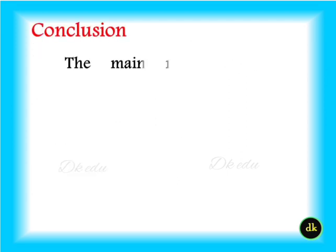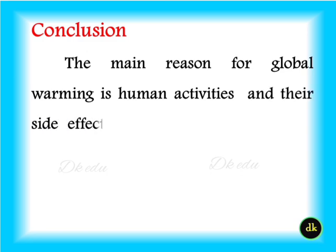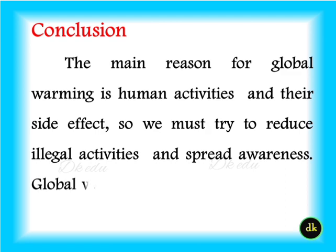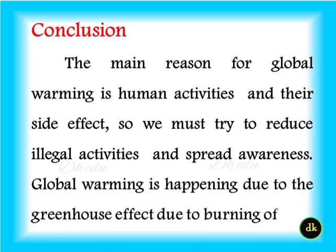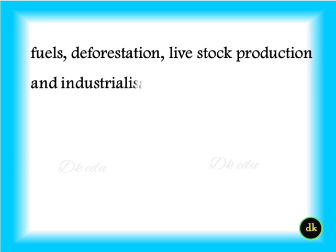The main reason for global warming is human activities and the side effects. So, we must try to reduce illegal activities and spread awareness. Global warming is happening due to the greenhouse effect, due to burning of fuels, deforestation, livestock production and industrialization. Thanks for watching.